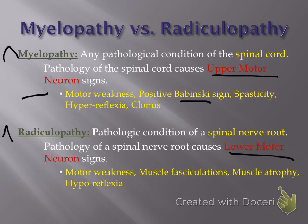Radiculopathy is going to be compression or disease of the lower motor neurons, and it's going to produce the following signs. Motor weakness — similar to myelopathy — but with sustained or severe radiculopathy you can get muscle fasciculations, or fast twitch fasciculations of the muscle fibers themselves, or even muscle atrophy because the muscle will start to die and shrink due to the lack of use because the nerve is so compressed. With lower motor neuron disease, you will get hyporeflexia, meaning the reflexes will be diminished or even totally blunted.